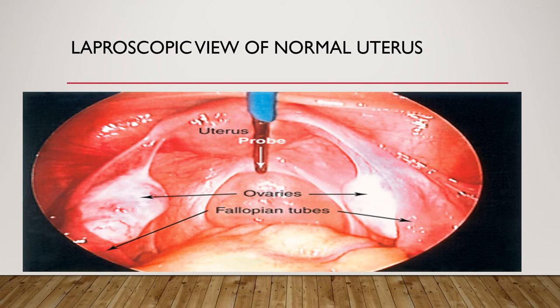Let's have a look at this picture. This is a laparoscopic view of the pelvis — a camera inserted from the umbilicus that allows us to view the pelvic organs, including the uterus, both ovaries, and fallopian tubes. The tissue here is healthy. There are no adhesions and no abnormal spots. This is the appearance of normal organs in the pelvic cavity.